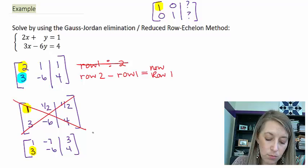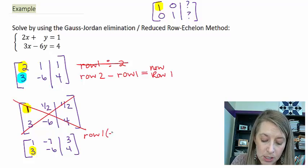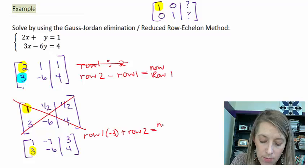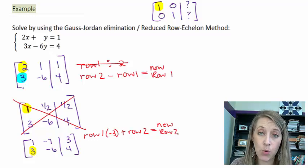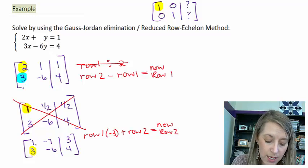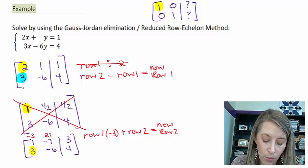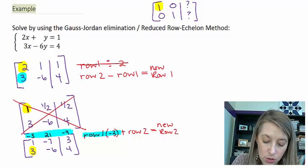I'm going to multiply row 1 by the thing that's going to cancel out this 3, which happens to be a negative 3. Add it to my row 2, and that's going to be my new row 2. So if you need to do scratch work, that's fine. I suggest it so you don't do simple mistakes. If I take this 1 and multiply it by a negative 3, negative 7 times negative 3 gives me 21, 3 times negative 3 gives me negative 9. So that is row 1 times negative 3.